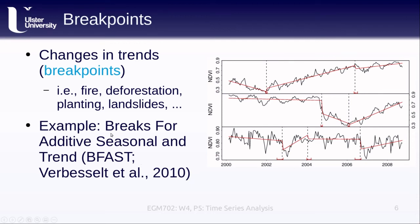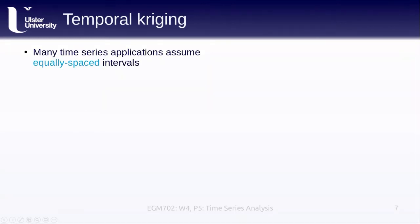This example comes from a paper that proposed a method for finding breakpoints in time series data. The algorithm is called Breaks For Additive Seasonal and Trend, or BFAST, and this is something we will work with in the practical for this week.